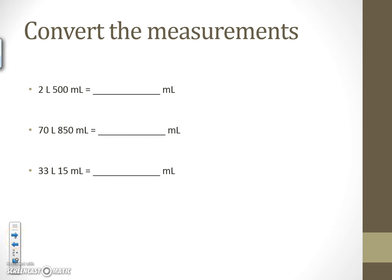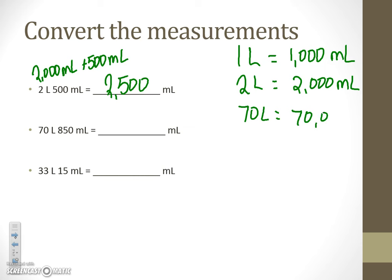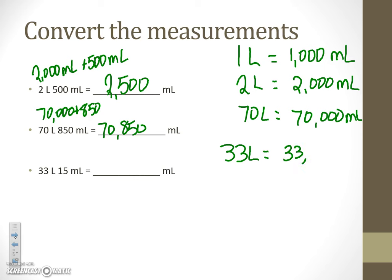Now let's convert some measurements. For liters to milliliters, 1 liter equals 1,000 milliliters, so 2 liters equals 2,000 milliliters. Therefore, 2,000 milliliters plus 500 milliliters gives a total of 2,500 milliliters. 70 liters equals 70,000 milliliters, and 70,000 plus 850 would be 70,850 milliliters. For 33 liters, that's 33,000 milliliters, and 33,000 plus 15 is 33,015 milliliters.